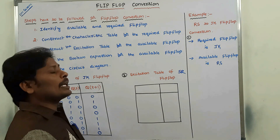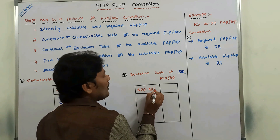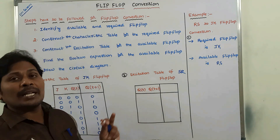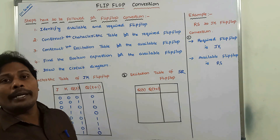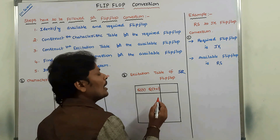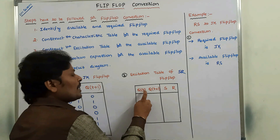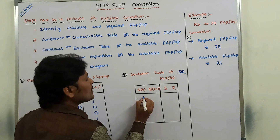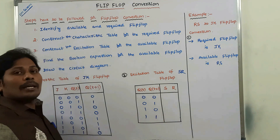In the excitation table of SR flip-flop, we take two inputs: Q(t) and Q(t+1). Q(t) is the previous output, and Q(t+1) is the present output — also called present state and next state. The outputs are S and R. With two inputs, there are four possible input combinations: 00, 01, 10, 11.